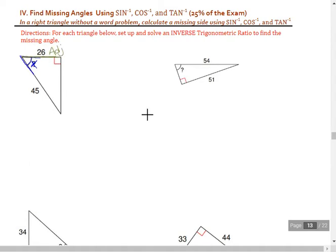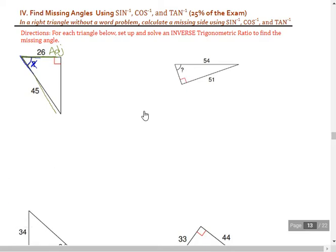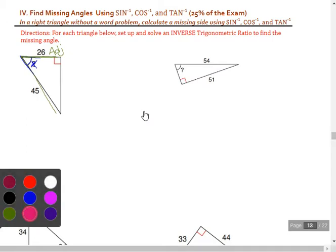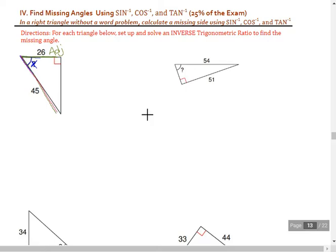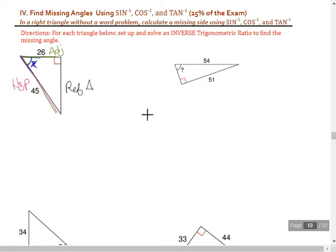Let's see what we've been given. We have a 26, that's going to be the adjacent side, and then we have 45, that's going to be the hypotenuse side.